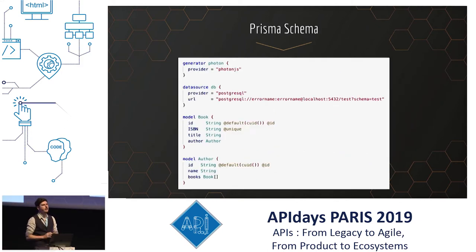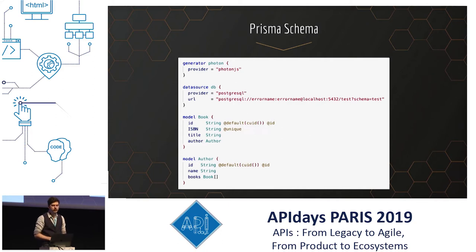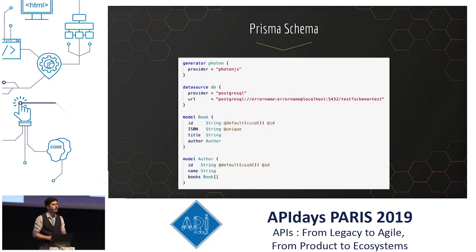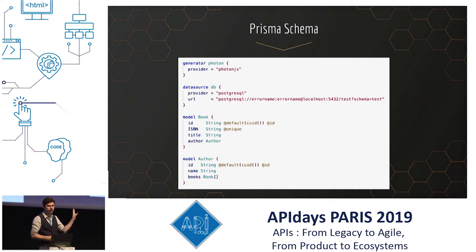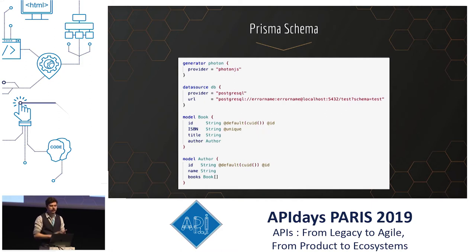Here is what a Prisma schema looks like. The first part is the generator, but we'll talk about that later. Then there is the data source, which is used to explain to the Prisma framework how to access your database — here it's a PostgreSQL database with a URL. And here is what's important: all the models of your application. For example, here are two models: a book and an author. Each model has a list of attributes — the book has an ID string, an ISBN string, a title string, etc.